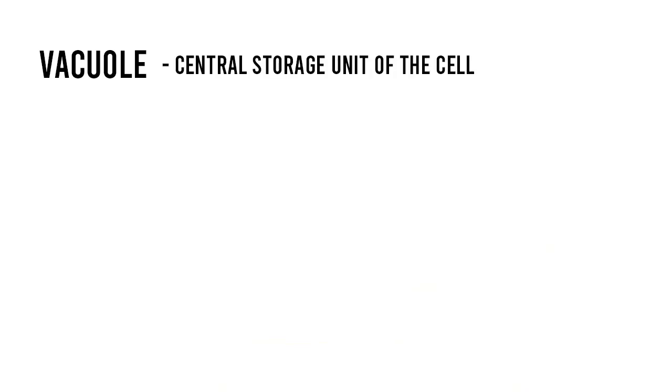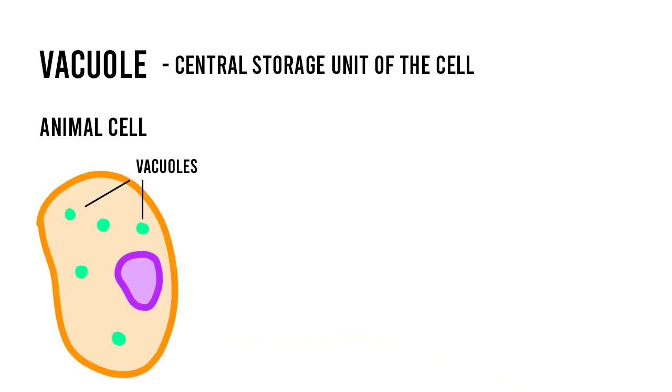Plants also have a unique vacuole, which is considered the central storage unit of the cell. Typically, in an animal cell, you'll find that vacuoles are small and have functions such as storage, excretion, osmoregulation, and digestion.